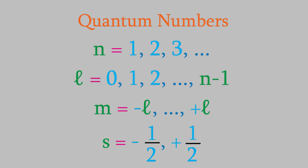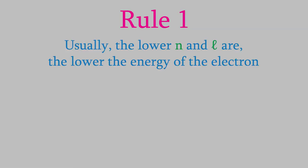It turns out that we can use those four numbers to understand a lot about what atoms are like and how they bond and interact with each other. To do it, we just need three more pieces of information. First, most of the time, the lower the quantum numbers n and l are for an electron, the lower the electron's energy is. There are exceptions, but you'll learn about those later.